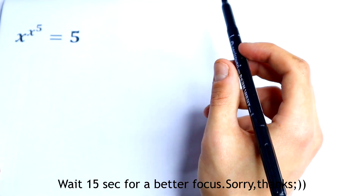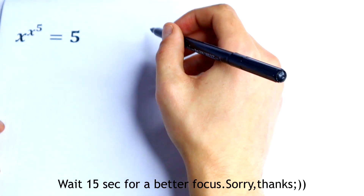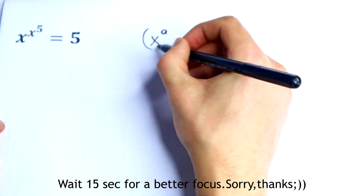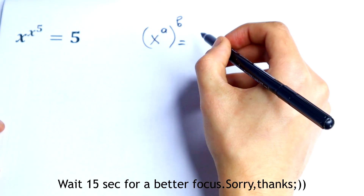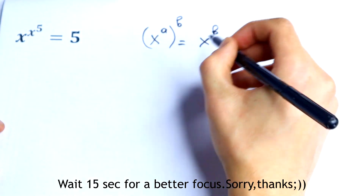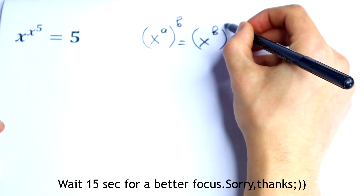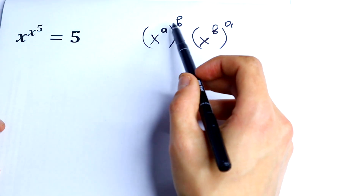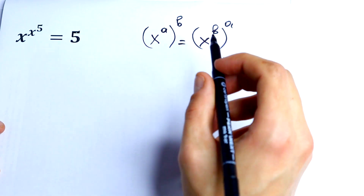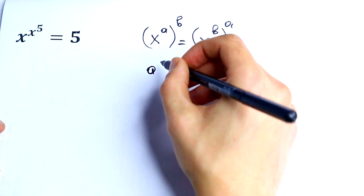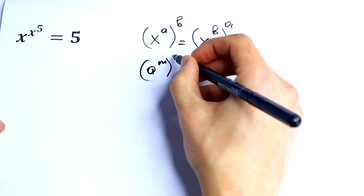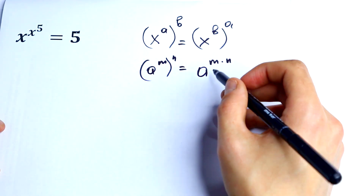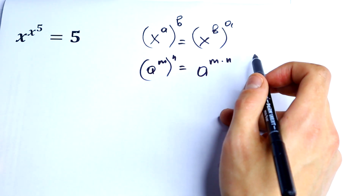First of all we need to know the rule of interchange: x to the power a, all raised to the power b, would be equal to x to the power b all raised to the power a — so we can change these exponents. The second rule we need is a to the power m to the power n equals a to the power m times n, so we multiply these exponents as well.